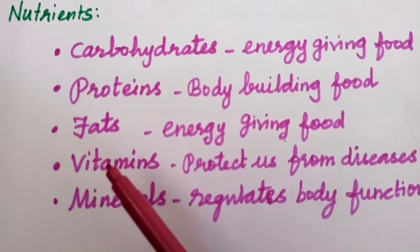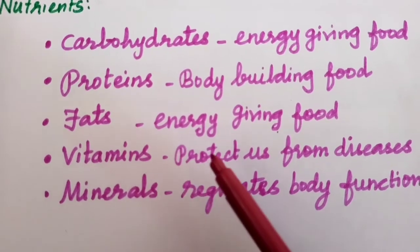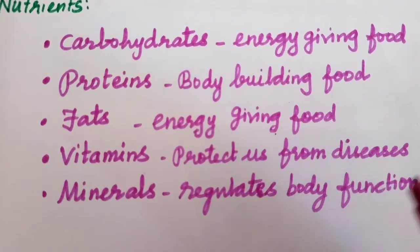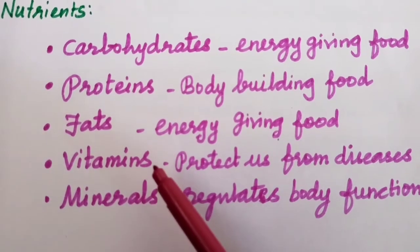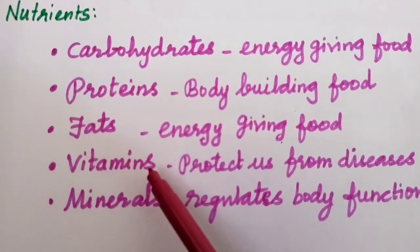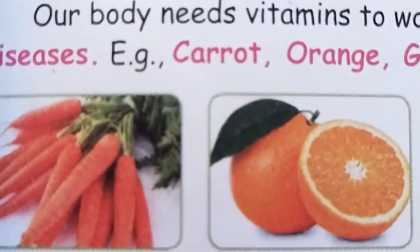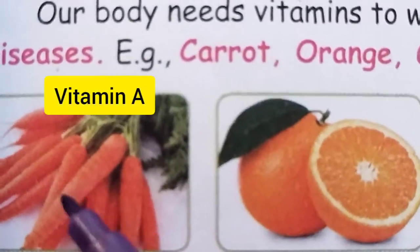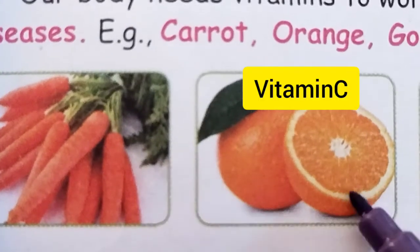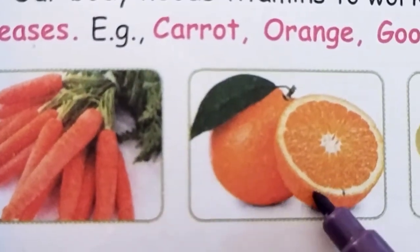Students, the next important nutrient is vitamins. Vitamins is one of the important nutrients that protect us from diseases. A lot of vitamins are present in fruits and vegetables, so they protect our body from diseases. Vitamin A is present in carrot and vitamin C is present in orange. These are examples of vitamins.